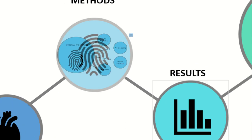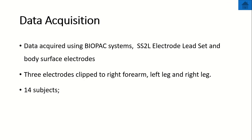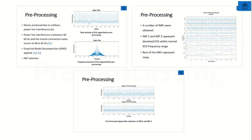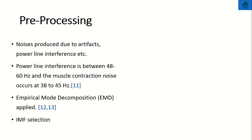Moving to materials and methods. For data acquisition, data was acquired using Biopac systems, SS2L electrode lead set, and body surface electrodes. Three electrodes were used, clipped to the right forearm, left leg, and right leg. The total dataset included 14 subjects, 8 males and 6 females. For preprocessing, raw signals included noise from artifacts and power line interference. Power line interference is between 48 to 60 Hz and muscle contraction artifact noise occurs at 38 to 45 Hz. Empirical mode decomposition (EMD) was applied for preprocessing, resulting in intrinsic mode functions (IMFs), followed by IMF selection.